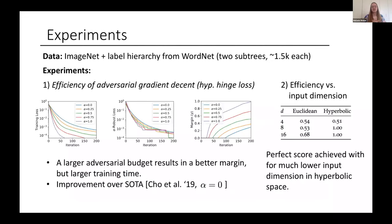I also briefly want to show some experiments. These are really only validation experiments on small data sets that illustrate the results of our theoretical analysis. For the adversarial gradient descent, what I'm showing you here uses the hyperbolic hinge loss. For the other loss functions, we have also some results in the paper. Here we show that indeed, a larger adversarial budget allows us to achieve a better margin. Of course, nothing is free. We need a larger training time to achieve that. But we do achieve a better margin. And importantly, we improve over the state of the art.